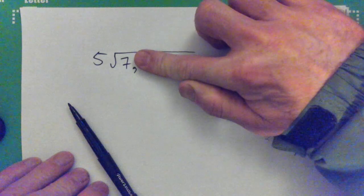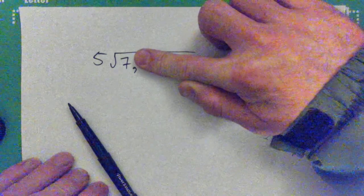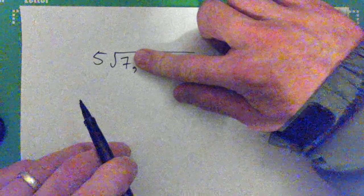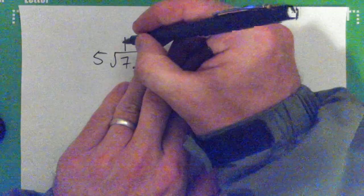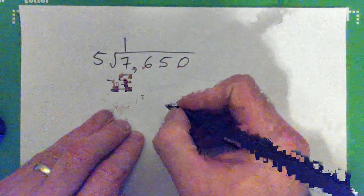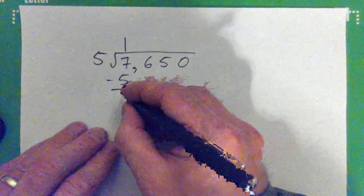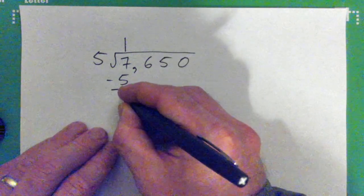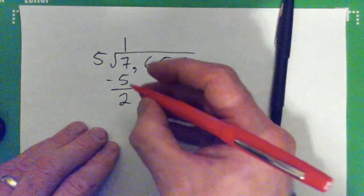Five into seven, right? It goes one time, so put that up there. Now we go this number times this number, write it down here. One times five, write it there. Now subtract, seven minus five. Then take this number, bring it down.